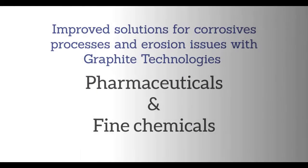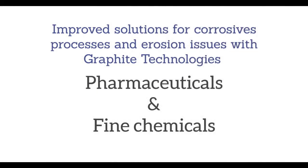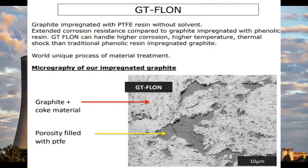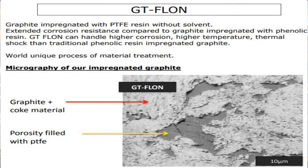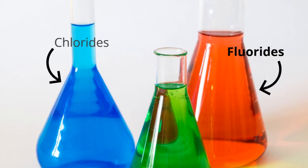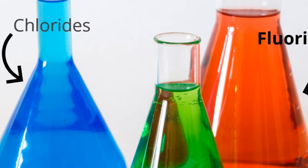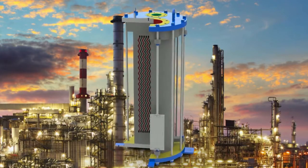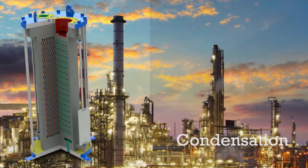Graphite technology has come up with improved solutions for corrosive processes and erosion, especially for pharmaceuticals and fine chemicals. Graphite grades like GT Chelite Plus, GT Oxyflon, and GT Flan Pharma show extraordinary corrosion properties and are highly resistant to contaminants like chlorides and fluorides.